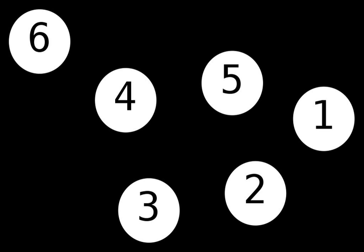A cycle graph or circular graph of order n≥3 is a graph in which the vertices can be listed in an order v1, v2, …, vn such that the edges are the pairs {vi, vi+1} for i = 1, 2, …, n−1, plus the edge {vn, v1}. Cycle graphs can be characterized as connected graphs in which the degree of all vertices is 2. If a cycle graph occurs as a subgraph of another graph, it is a cycle or circuit in that graph.